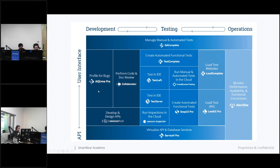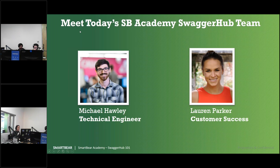We focus on providing software quality tools for teams, and specifically our goal is to infuse quality and speed into the entire software development lifecycle. The SmartBear product portfolio covers the entire software development lifecycle, from development to testing to operations across both the API and UI layer. Our products enable teams to deliver the best software faster than ever. Michael Holly is our technical engineer, Nathan is one of our technical engineers, and I'm Lauren Parker — I work with customer success.